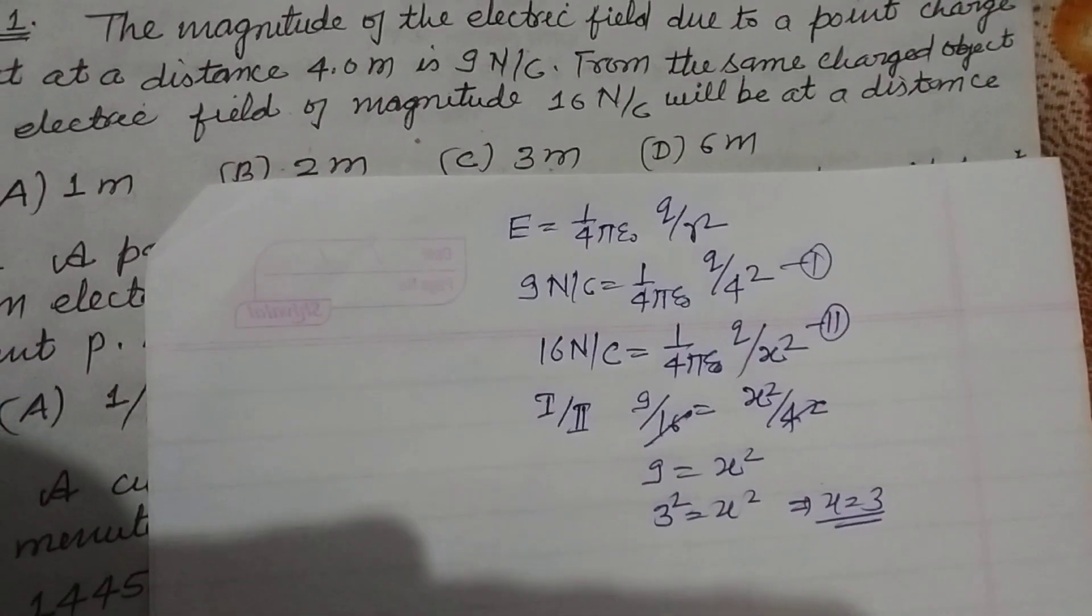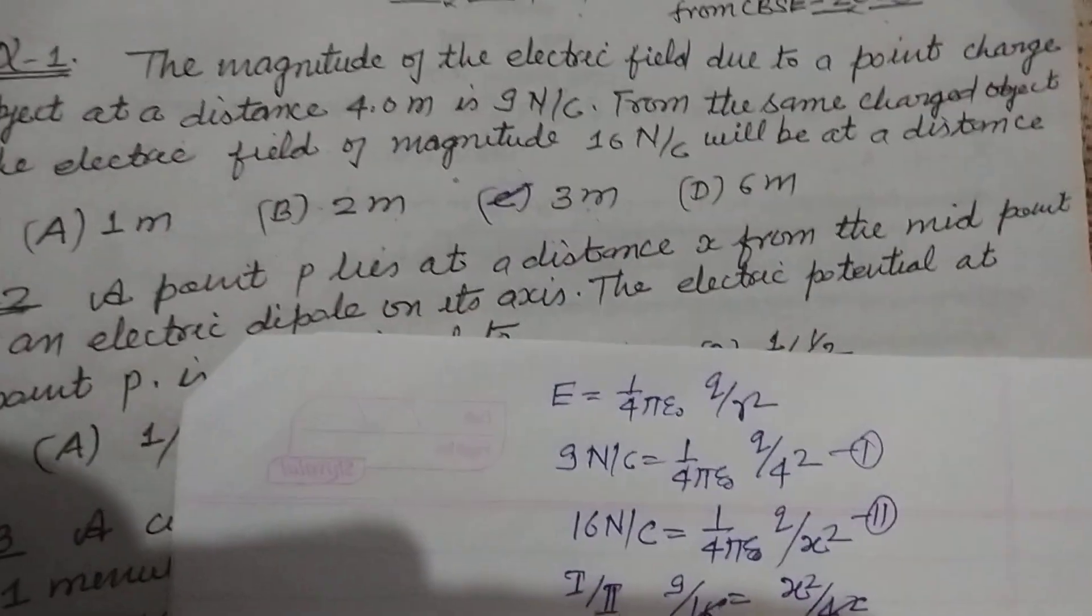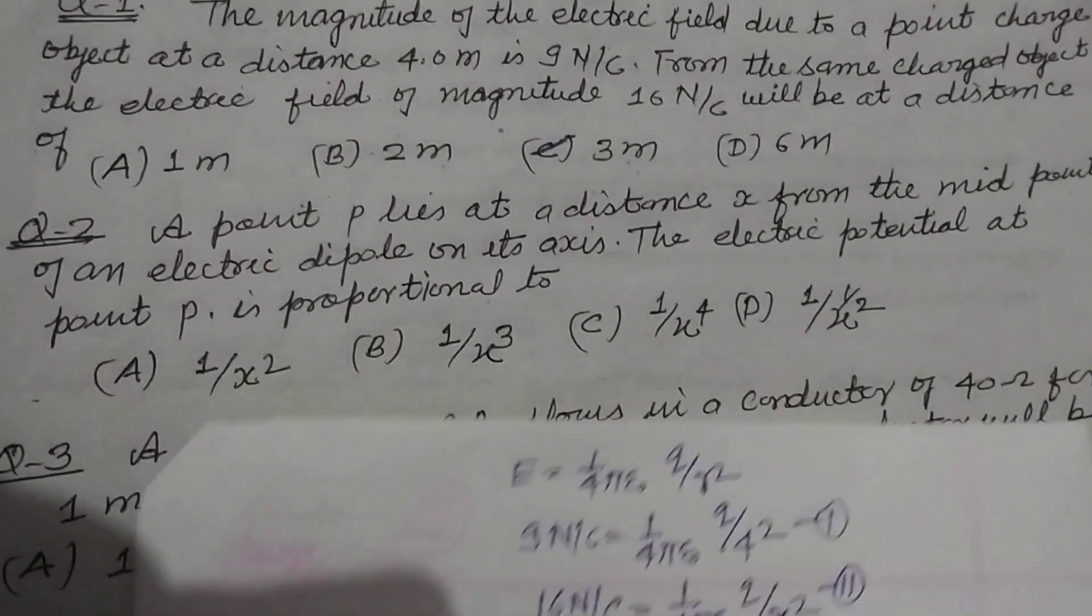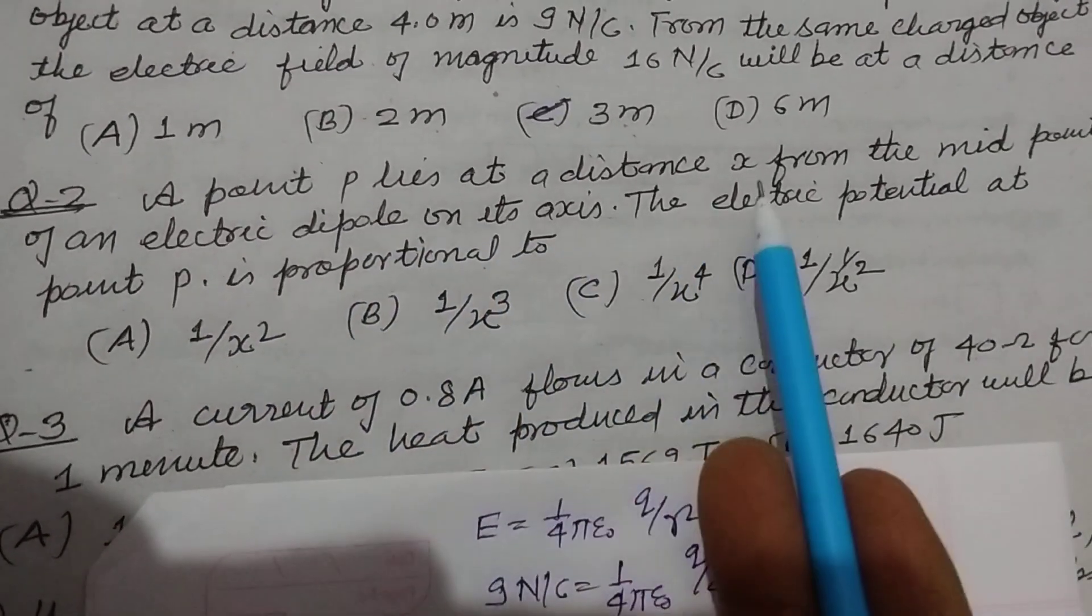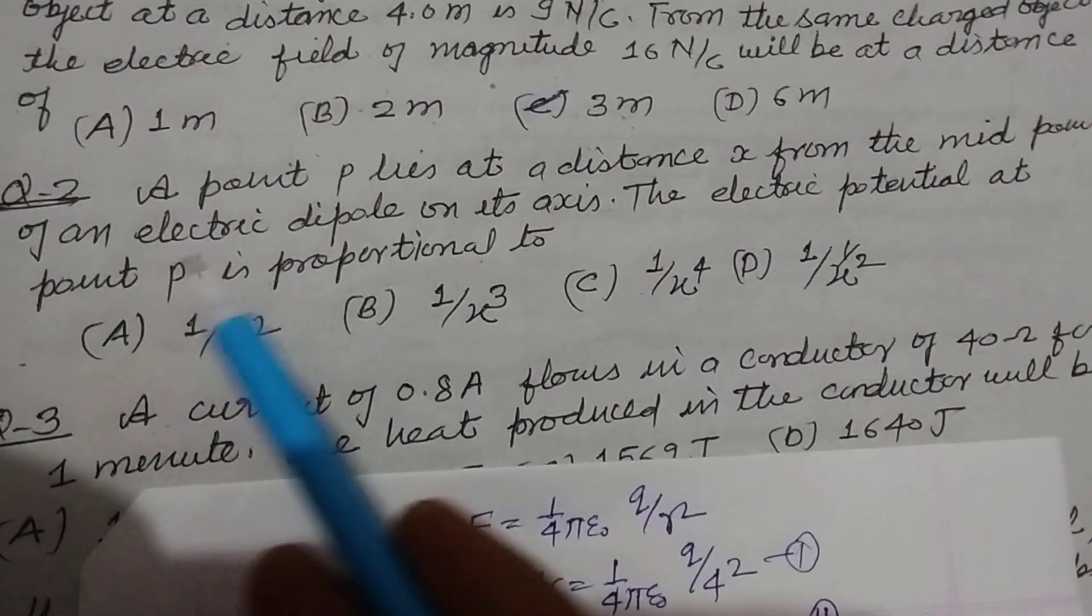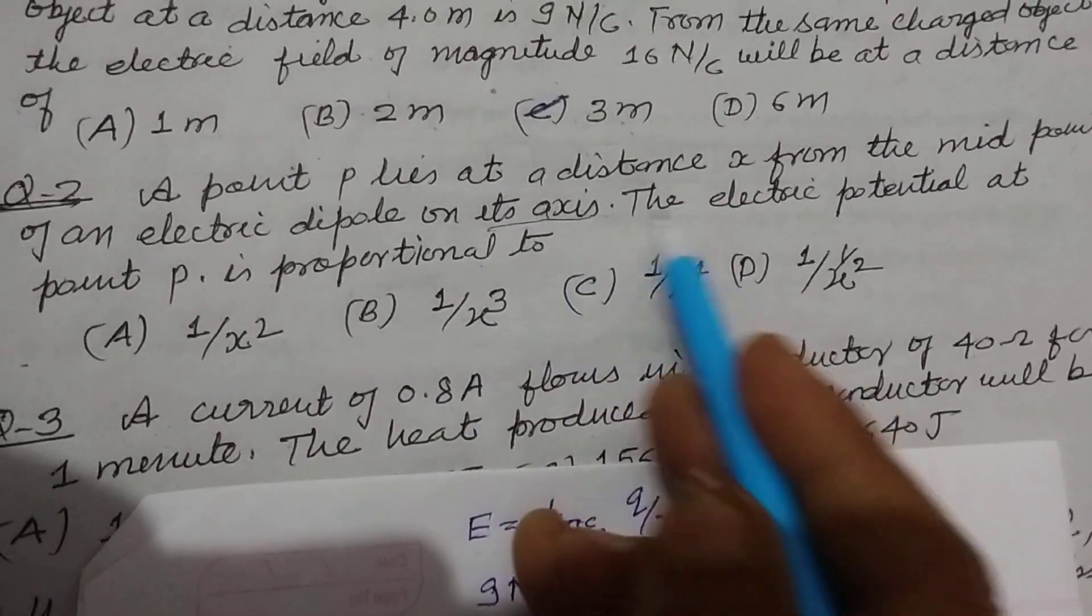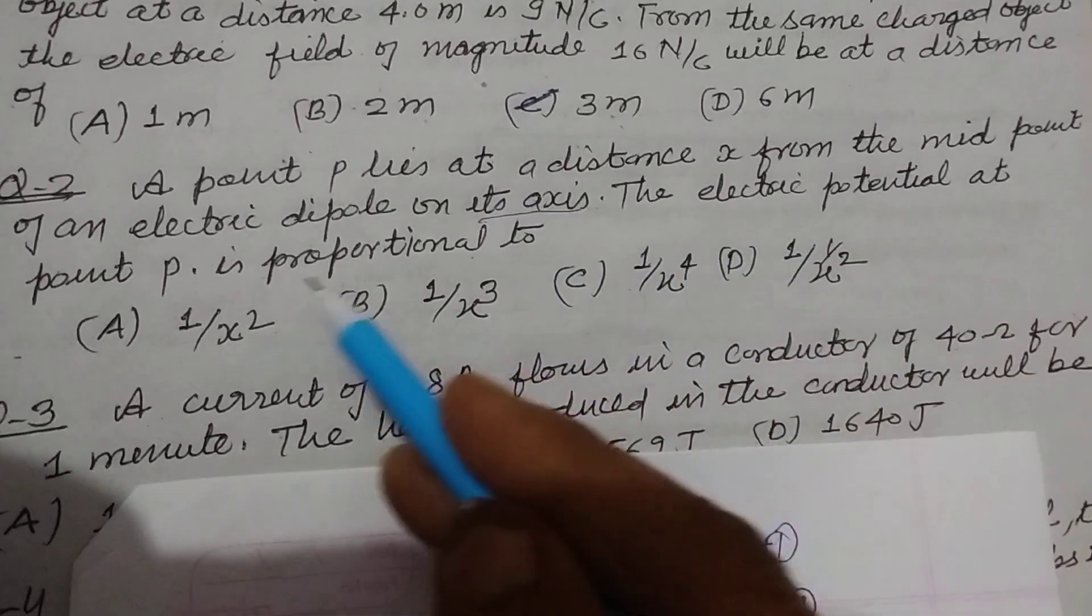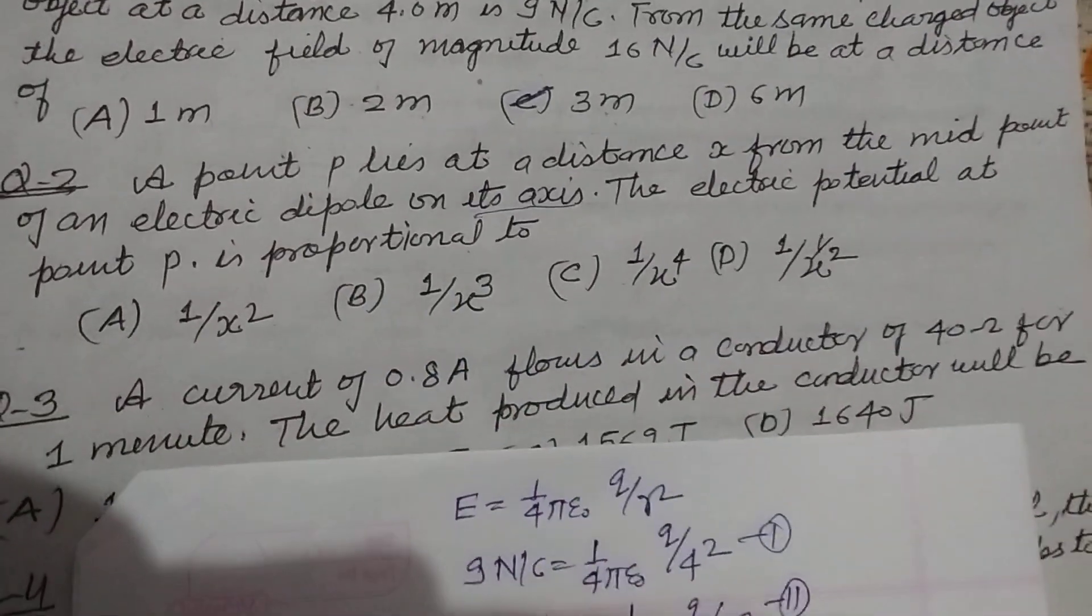So answer of this question is C, 3. Now the next question is: a point P lies at a distance x from the midpoint of an electric dipole on its axis. The point is noted on its axis. The electric potential at point P is proportional to?